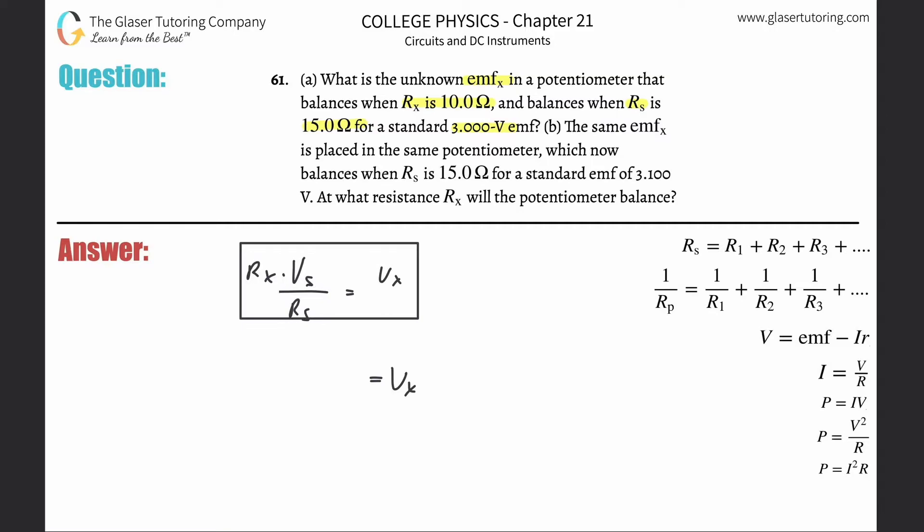R sub x they told us was 10, V sub s, the standard cell emf, is 3, and the R sub s they told us is 15. So it's just a simple plug in: 30 over 15, obviously that's 2, so 2.00 volts. That takes care of letter a.